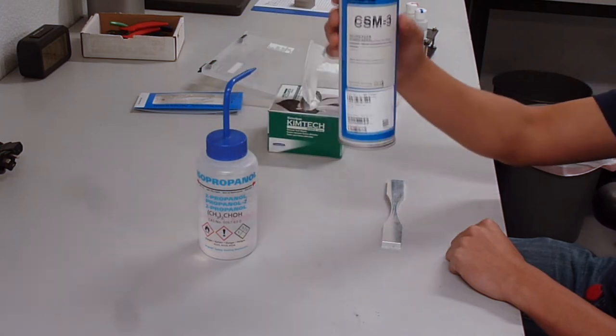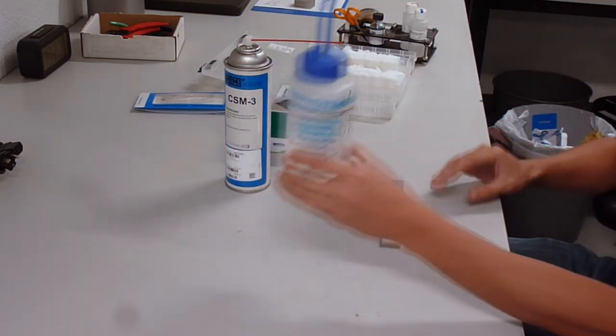The first step in applying a strain gauge is to prepare the surface. This includes solvent degreasing with a degreasing agent and isopropyl alcohol.